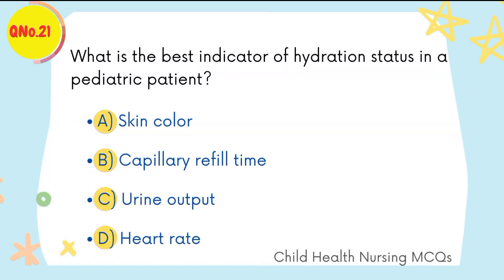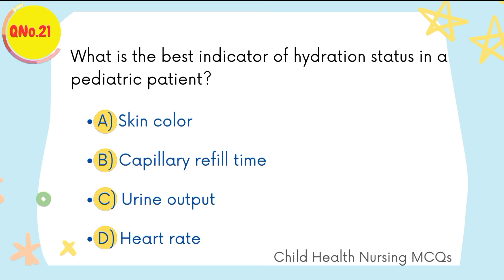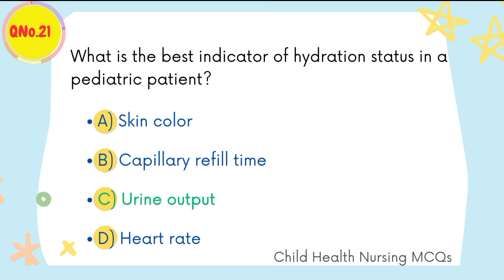Question number twenty-one: what is the best indicator of hydration status in a pediatric patient? C is the right option: urine output.